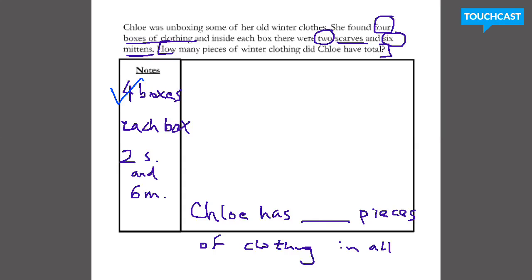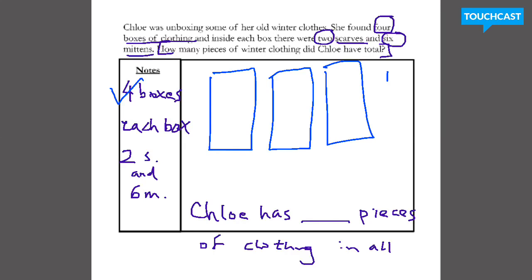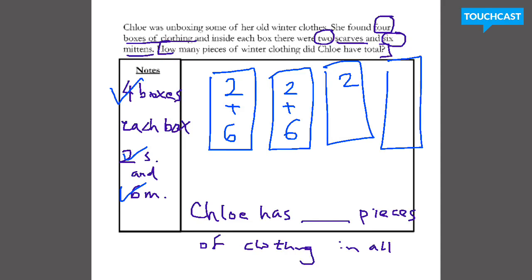First, she has four boxes — that's the first piece of information right now: one, two, three, and four. Okay, she has four boxes. Inside each box she has two scarves and six mittens. So this box has two scarves and six mittens. This box has two scarves and six mittens. This one has two scarves and six mittens. This one has, you guessed it, two scarves and six mittens.